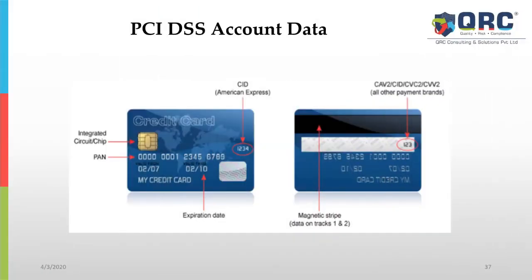Earlier it was only track data which was unencrypted, which was susceptible and vulnerable. That same track data is now in encrypted format in an integrated chip, which is generally present on the front side of the card. The PAN number — 15-digit, 16-digit, all the way from 13 to 19 digits — is called the PAN number.